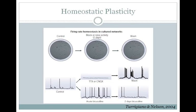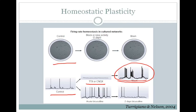Homeostatic plasticity is thought to be very important in developing circuits. You can observe it in cultured neurons: if you have a petri dish filled with connected neurons and record the control activity, you can see a baseline firing rate. If you then block firing by administering TTX or CNQX, and wait and wash it out, you see a rebound increase in activity — the firing rate post-TTX is much higher than in controlled conditions. If instead you increase activity in the culture by adding bicucullin, once you wash it out, you can see a much reduced firing rate in the cell culture.